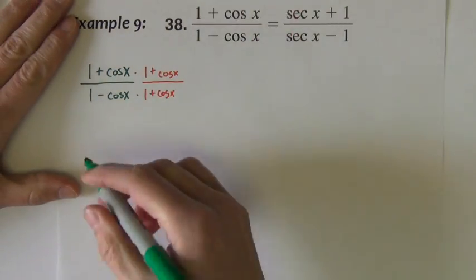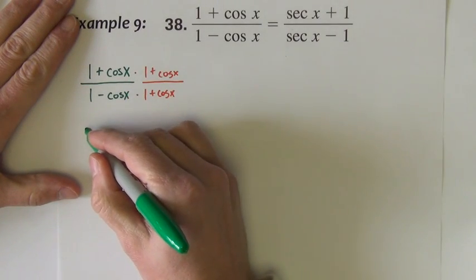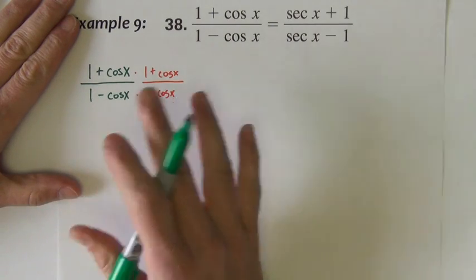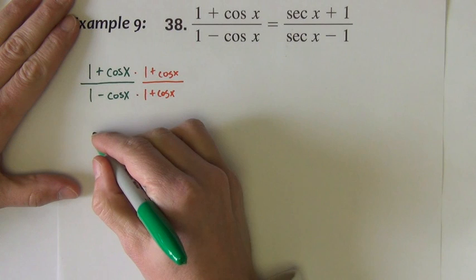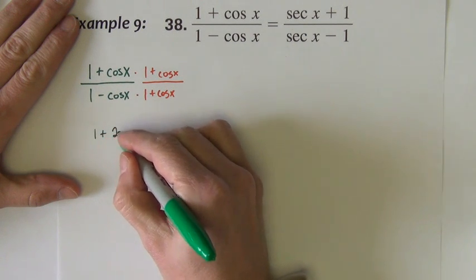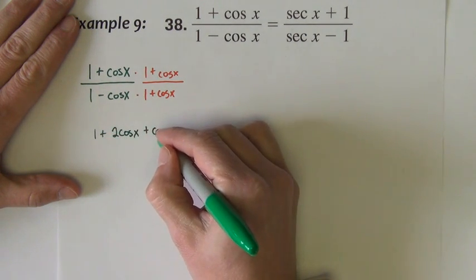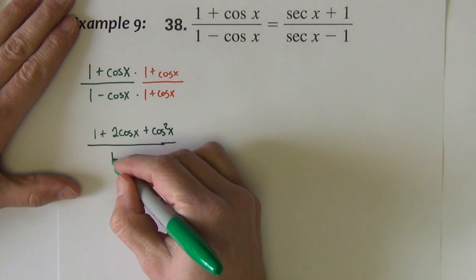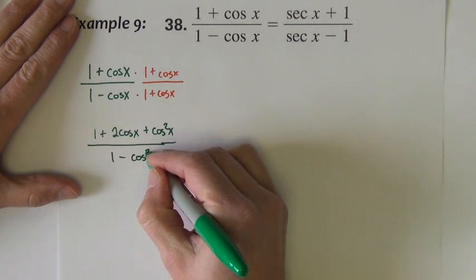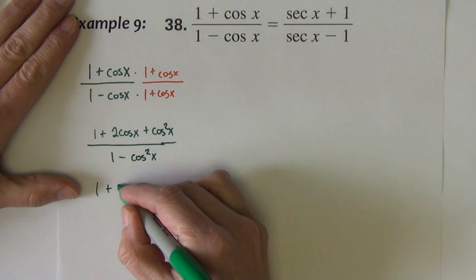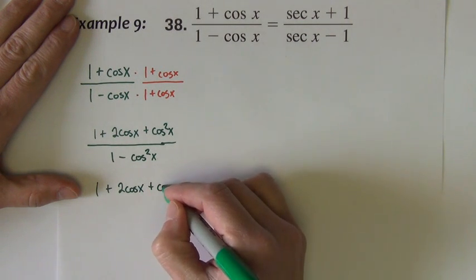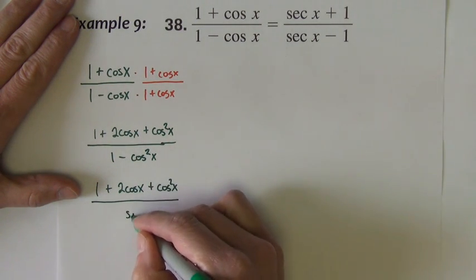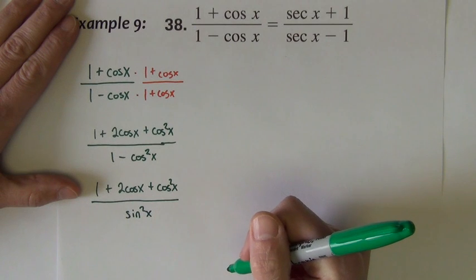If I were to do that, I could FOIL in the numerator. I'm just going to go fast through this because this is not the right way to do it anyway. If I FOIL in the numerator, I get 1 plus 2 cosine x plus cosine squared. In the denominator, we get 1 minus cosine squared, which can further be simplified to sine squared using a Pythagorean identity.